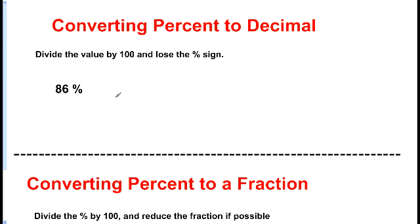Well, what about converting a percentage to a decimal? Well, this is just as easy. We take the percentage, 86%, and only this time we divide by 100 and lose the percentage sign. So, we'd get 0.86 would be the decimal.